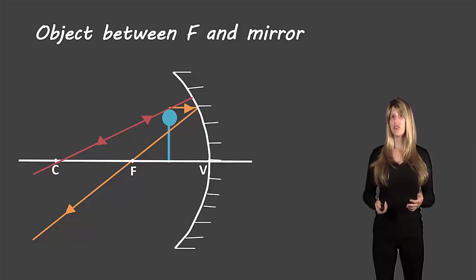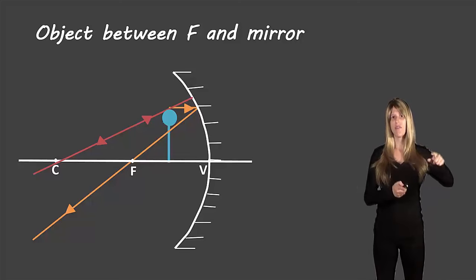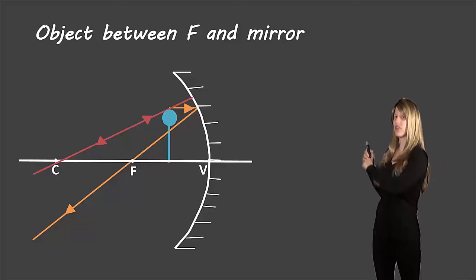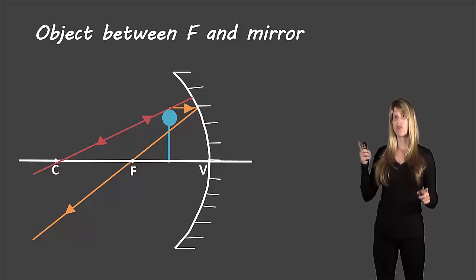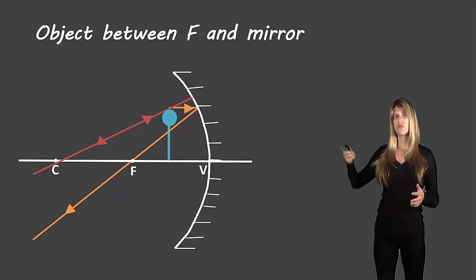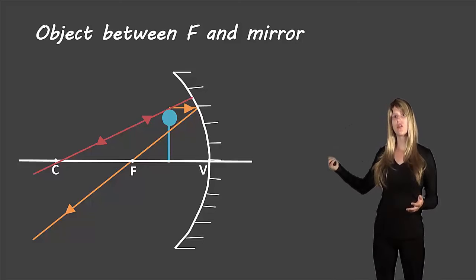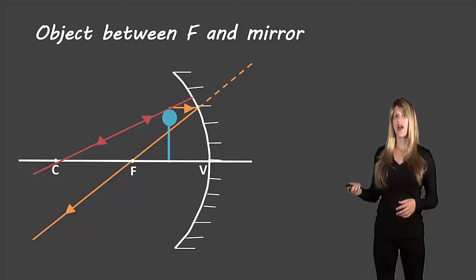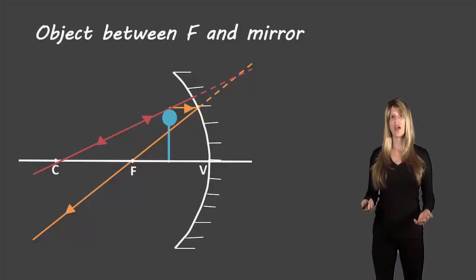Notice that the reflected rays are actually getting further apart — they're diverging toward the left and are not going to cross to create an image on the same side of the mirror. However, if we extend those lines backwards on the other side of the mirror, they will cross — they'll be getting closer together. So let's extend the orange and red lines backwards and we'll see that those lines do cross on the opposite side of the mirror.